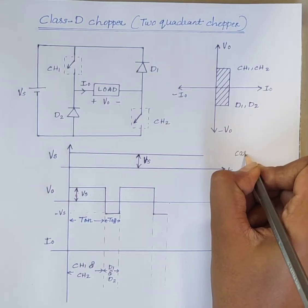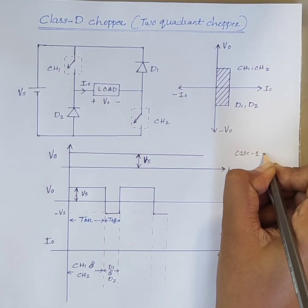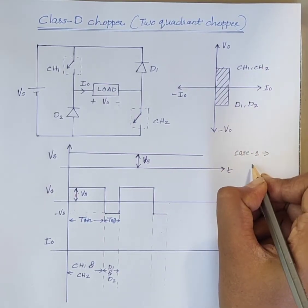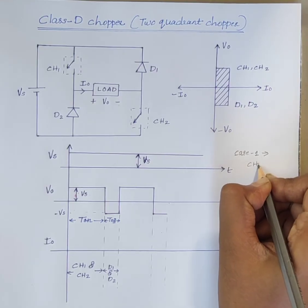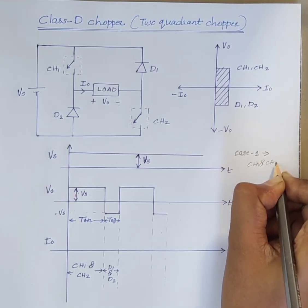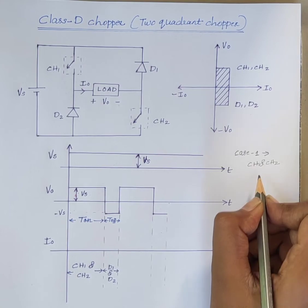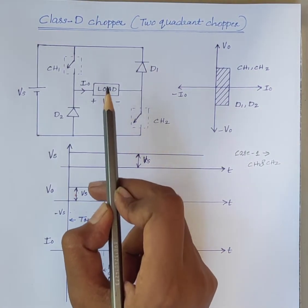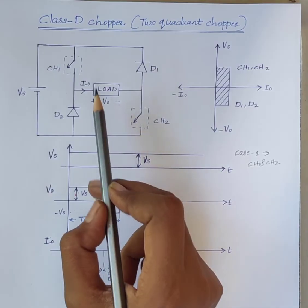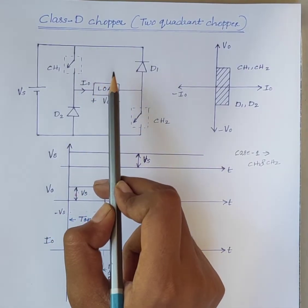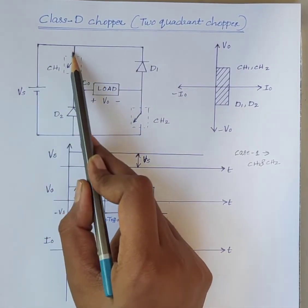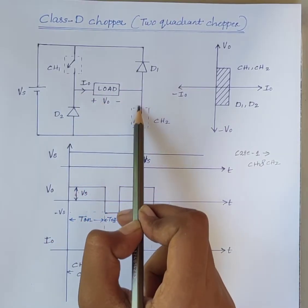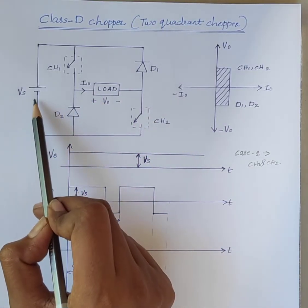In case 1, both CH1 and CH2 are in the on state. When both choppers are on, the current flows through the path VS, CH1, load, CH2, back to the source.